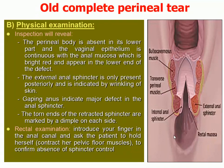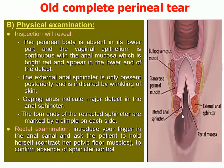During examination, inspection reveals the perineal body is absent because it is torn in its lower part, and the vaginal epithelium is continuous with the anal mucosa, which is bright red and appears at the lower end of the defect. The external anal sphincter is only present posteriorly, indicated by wrinkling of the skin. Gaping anus indicates a major defect in the anal sphincter. The torn ends of the retracted sphincter are marked by a dimple on each side. Chronic diarrhea may also occur.